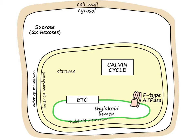Starting with light: light powers an electron transport chain. There's another video available that shows exactly how the electron transport chain works, so I won't go into the details here. Light hits the chlorophyll molecules, which powers the electron transport chain. As a result, we split water — taking water to give us half an oxygen molecule and two protons, with the electrons going into the electron transport chain.